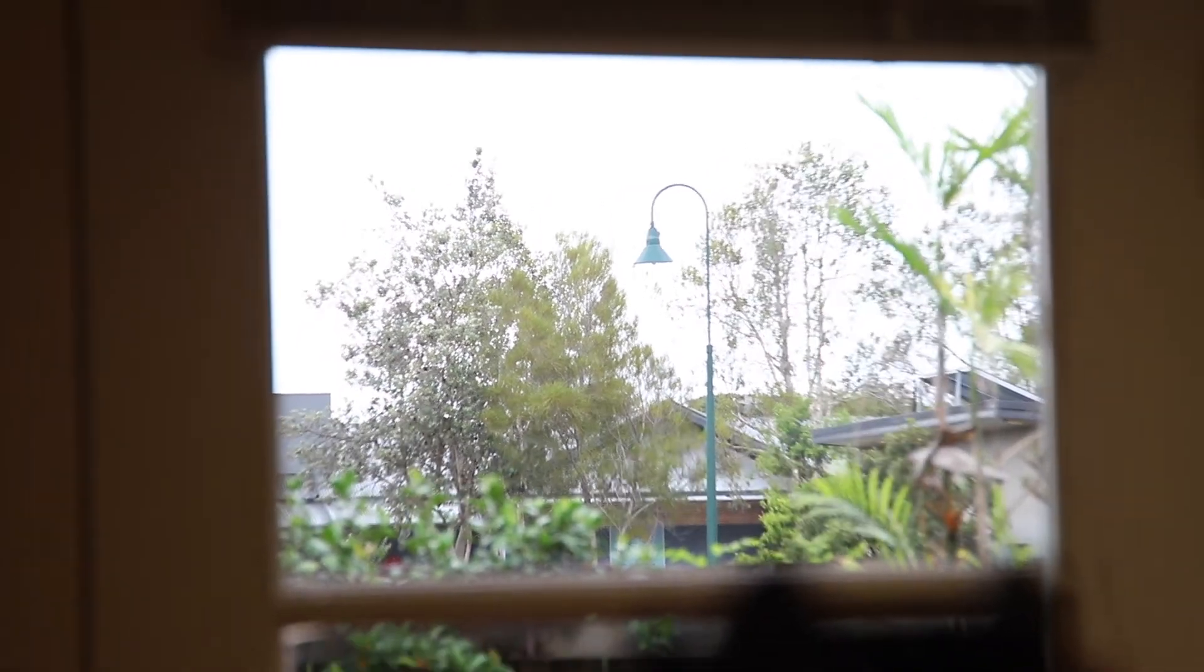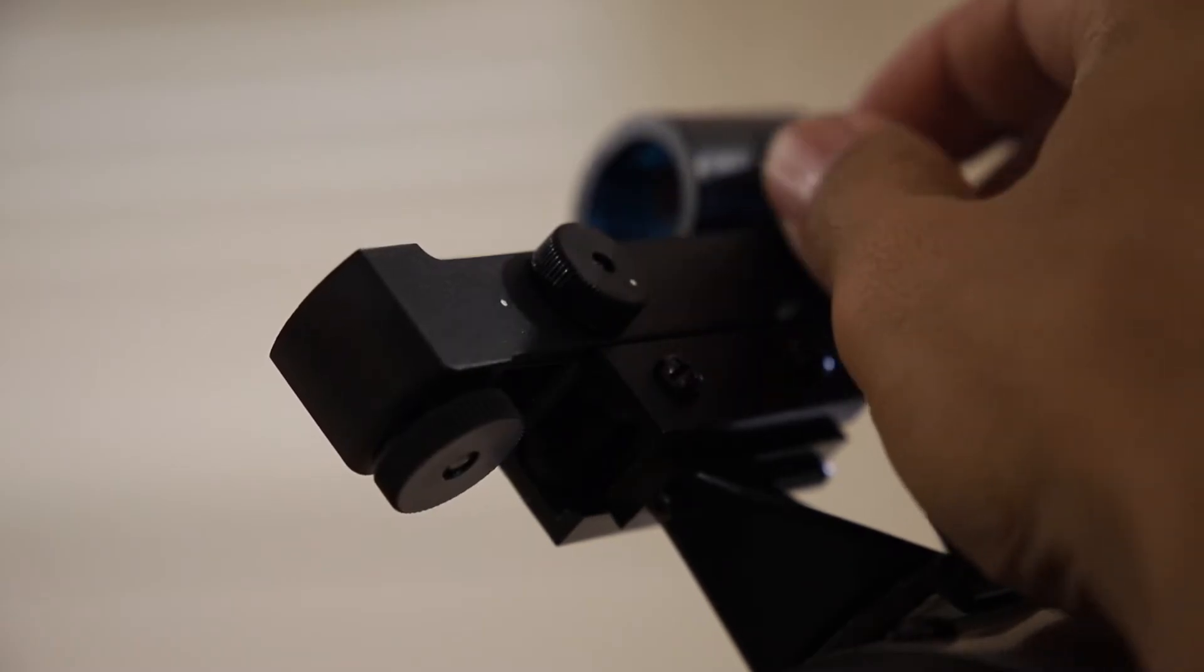This is best done by getting a distant object like a street light in the eyepiece. Turn on the red dot finder and make adjustments with the screws until the red dot is right in the middle, just like it is in the eyepiece.